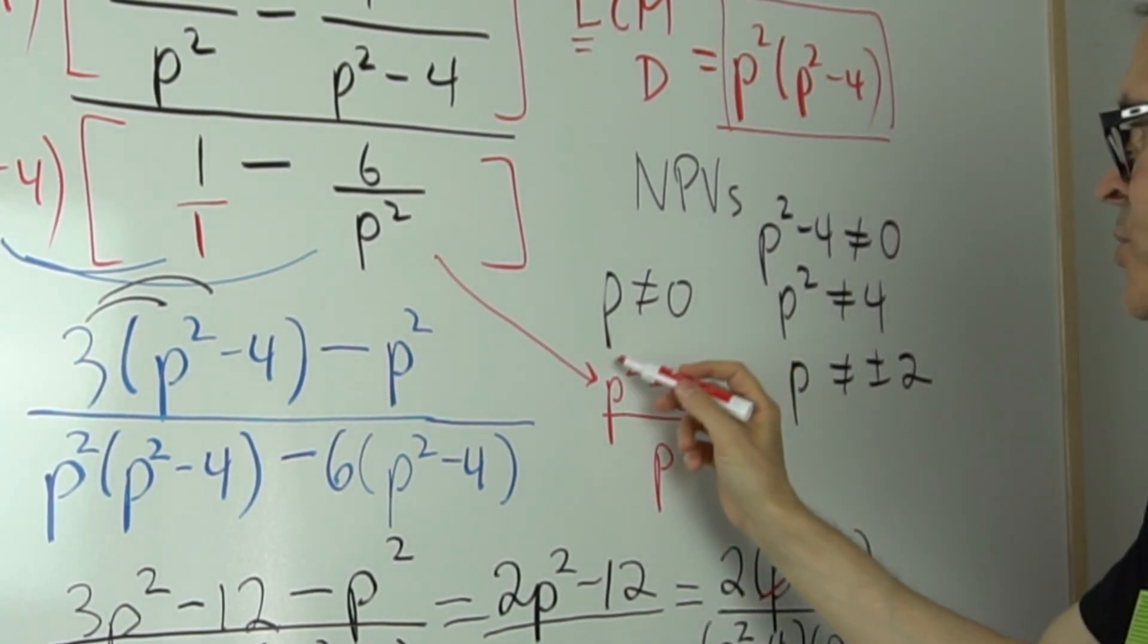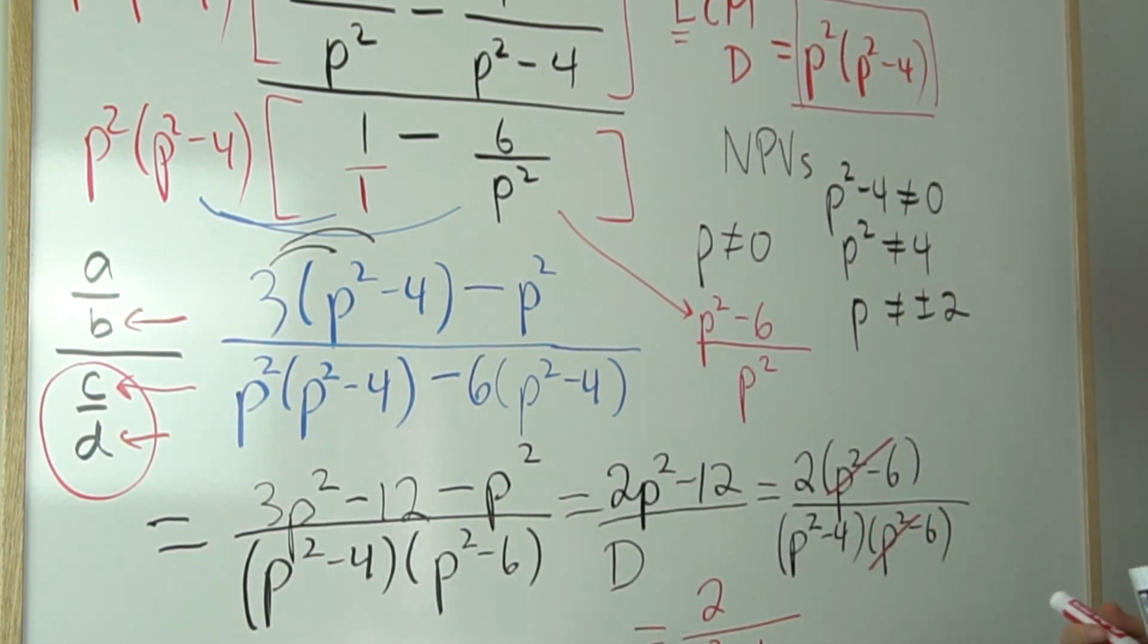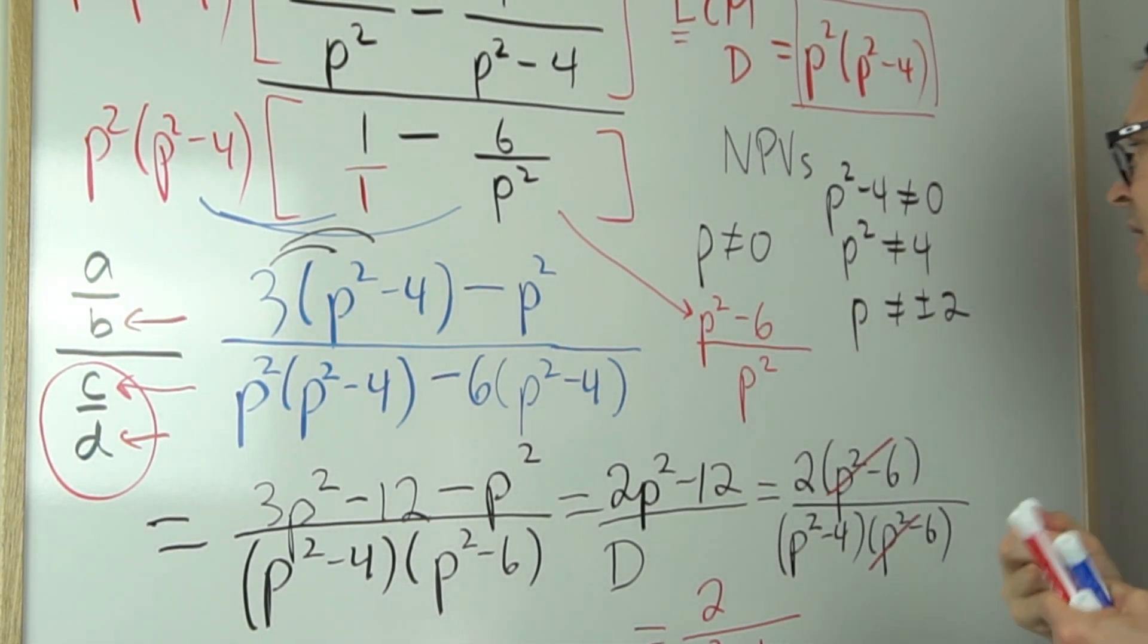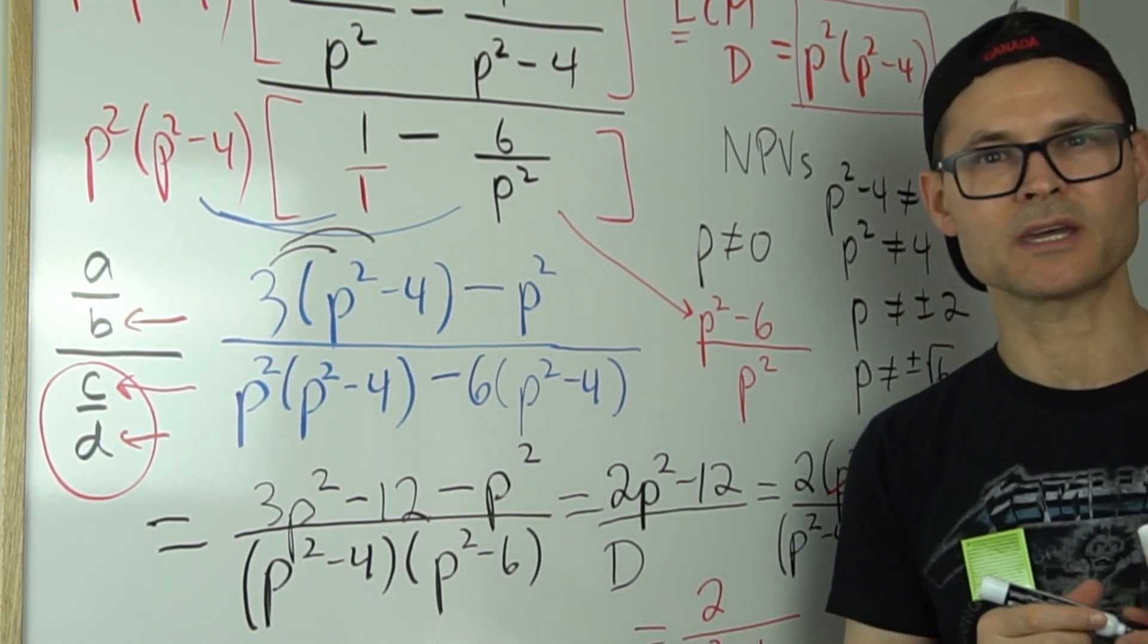So the p squared minus six is like the c. So not only can p squared minus four not be equal to zero, but p squared minus six can't be equal to zero. And the restriction there would be that p cannot be equal to plus or minus the square root of six.